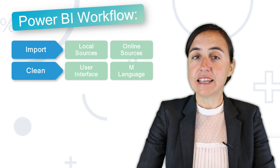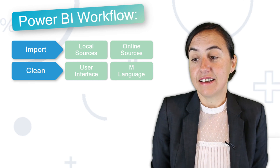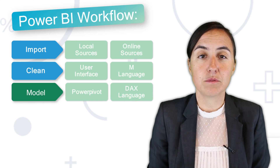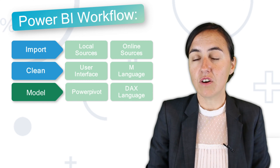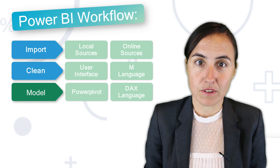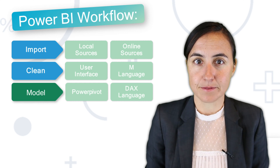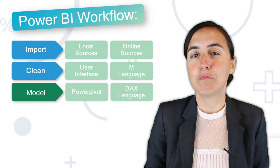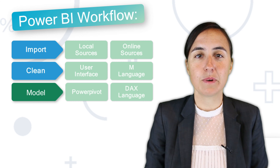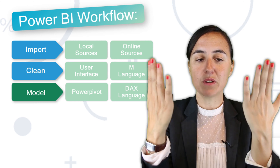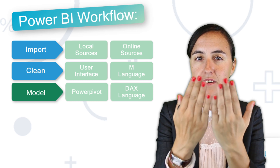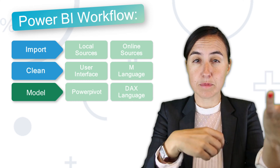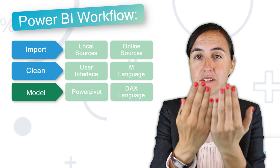Now we've cleaned our data, the next thing we need to do is model it. We talked about this in a previous video — you create a data model in Power BI. It sounds like a fancy term, but in Excel you would normally create a big table by joining tables and doing VLOOKUPs just to make one big table so you can start analyzing data.